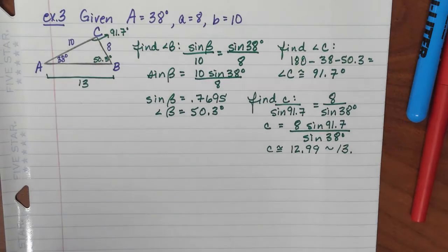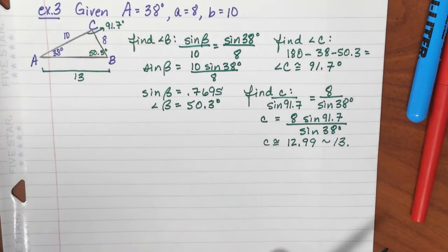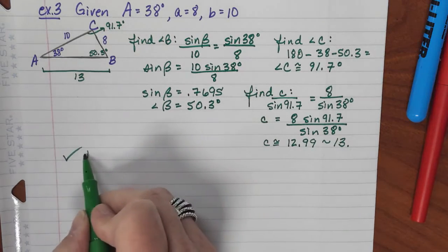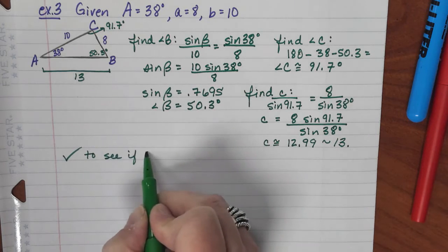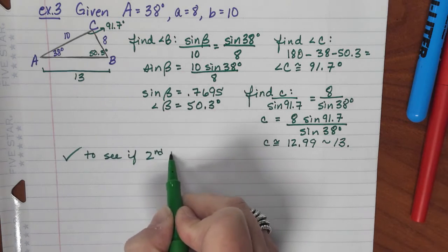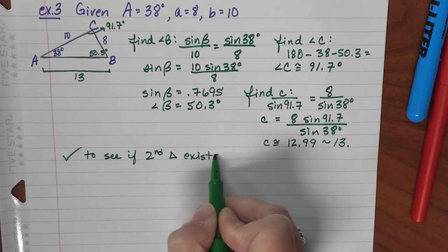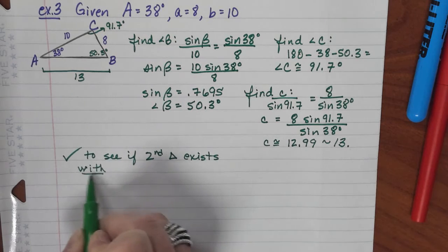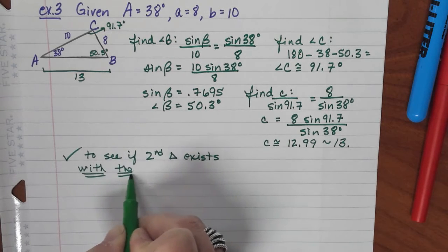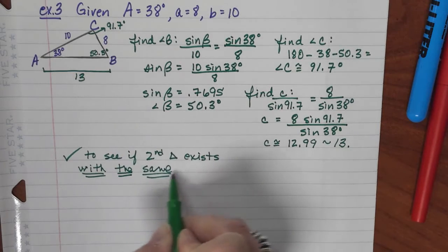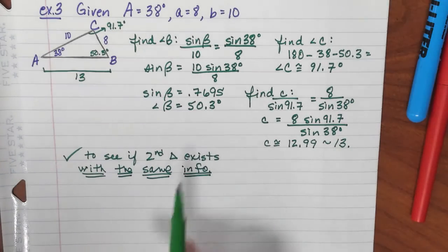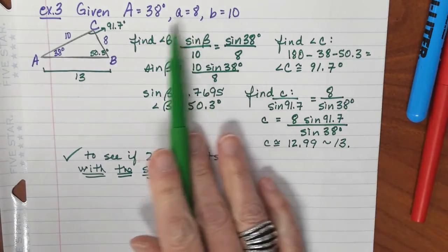Well, we did it. We found all the other three sides, so it does have a solution with those three pieces of information. Now, we just need to check. We are going to check to see if a second triangle exists. And this is very important. With the same information. It has to also have this same given information.